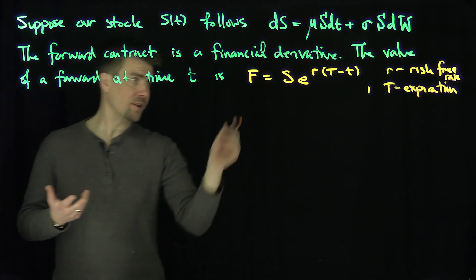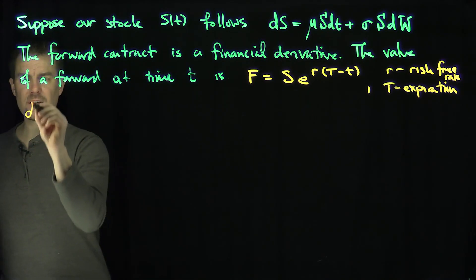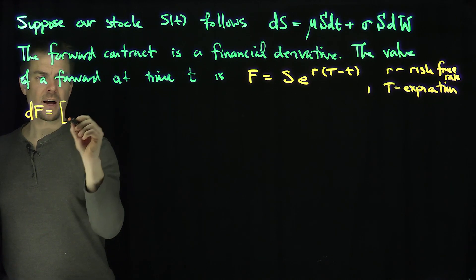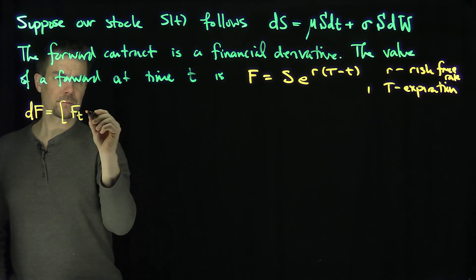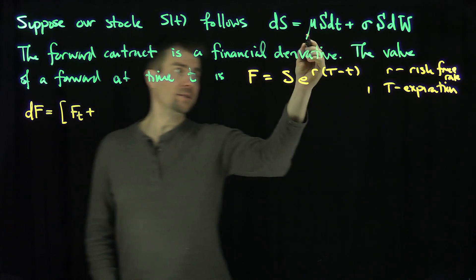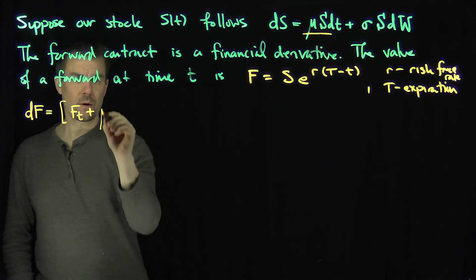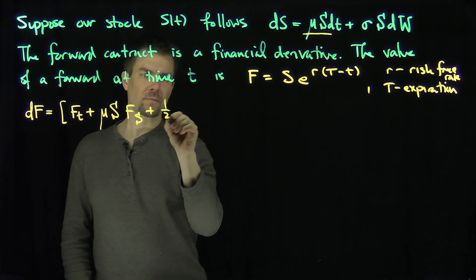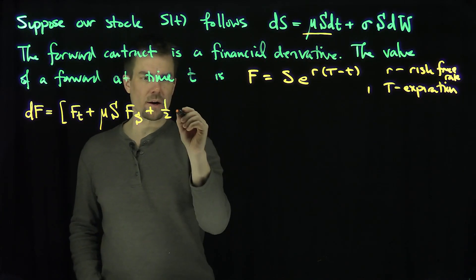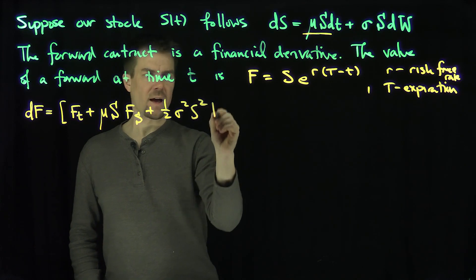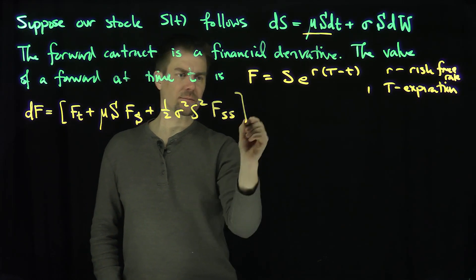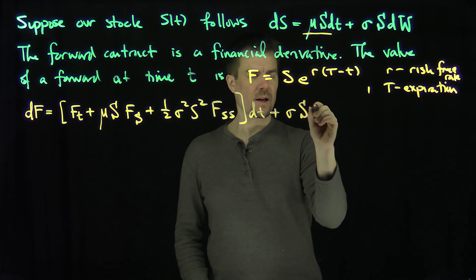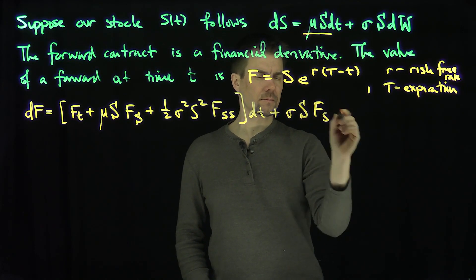So F is clearly a function of S and t. So we know that dF is going to satisfy the following equation by Itô's lemma: dF = [F_t + μS F_s + ½σ²S² F_ss] dt + σS F_s dW.